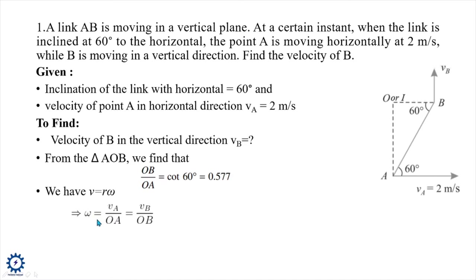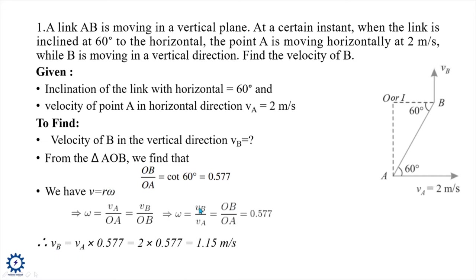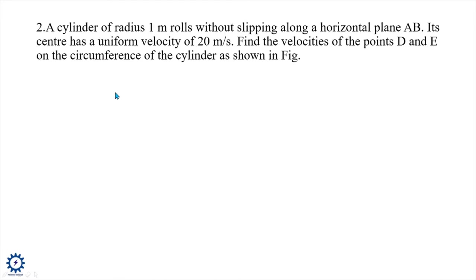Since omega is constant, vb/OB = va/OA, which gives vb/va = OB/OA = 0.577. Substituting the values, vb = 0.577 × 2 = 1.15 m/s. So the velocity of point B in the vertical direction is 1.15 m/s.